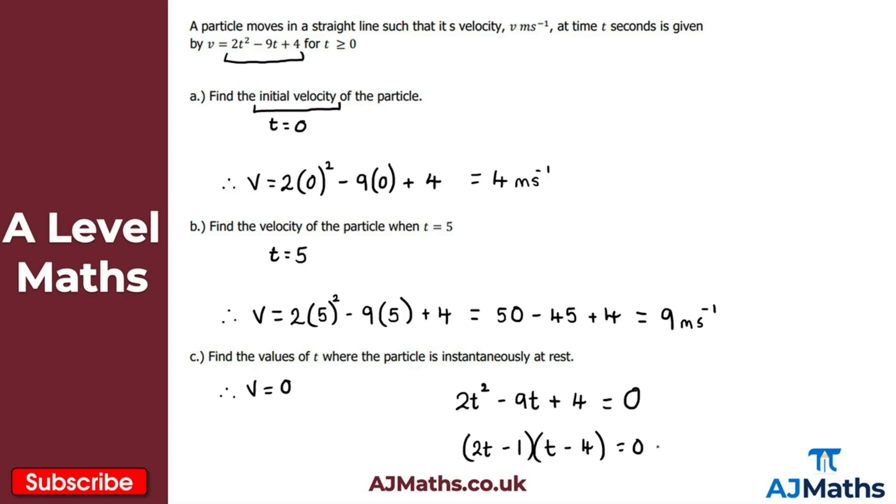We get two solutions here. My first solution is when 2t minus 1 is equal to zero. So in that case, if we solve that, I get that t is equal to a half. And for the next solution, that's when t minus 4 is equal to zero. In that case, we get t is equal to four.